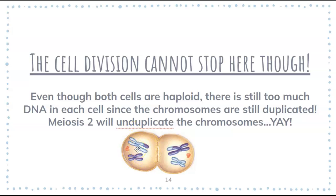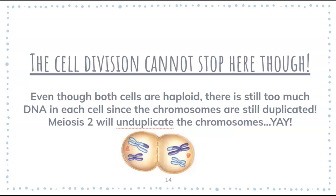So the next part is basically going to run the phases of mitosis again to pull apart our duplicated chromosomes. Prophase — the envelope starts to dissolve, spindle fibers form. Metaphase — line up in the middle. Anaphase — our sister chromatids get pulled apart to opposite sides. And then in telophase, notice we finally have our four resulting haploid cells.